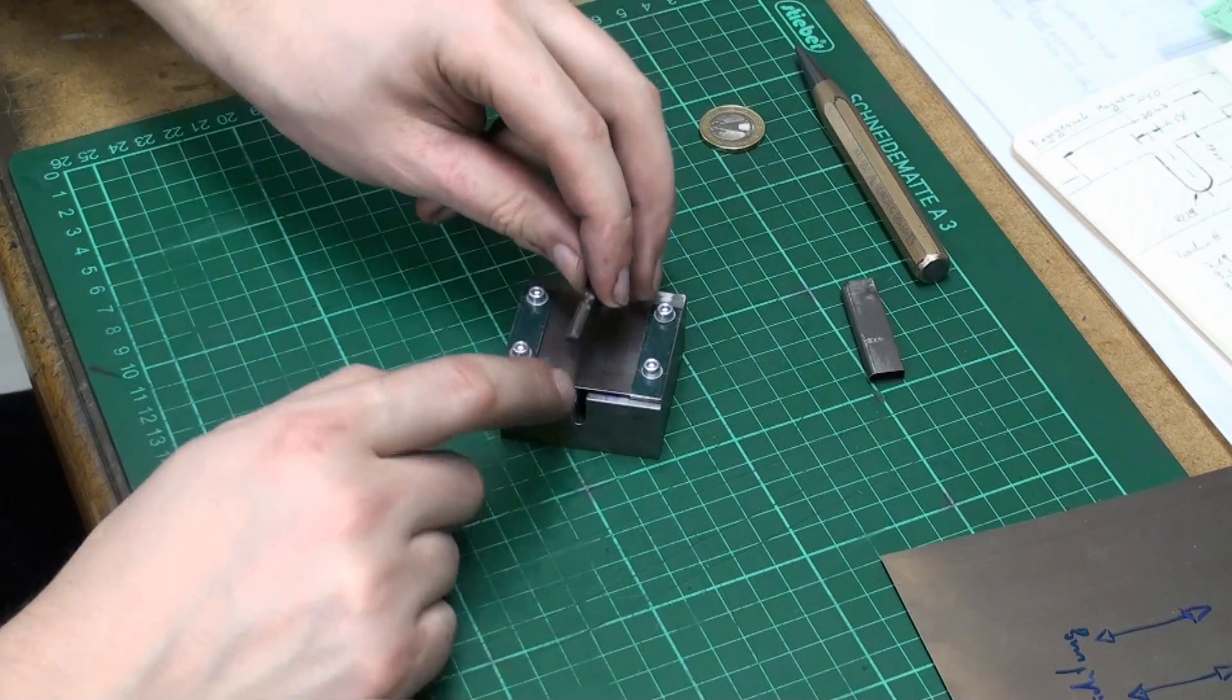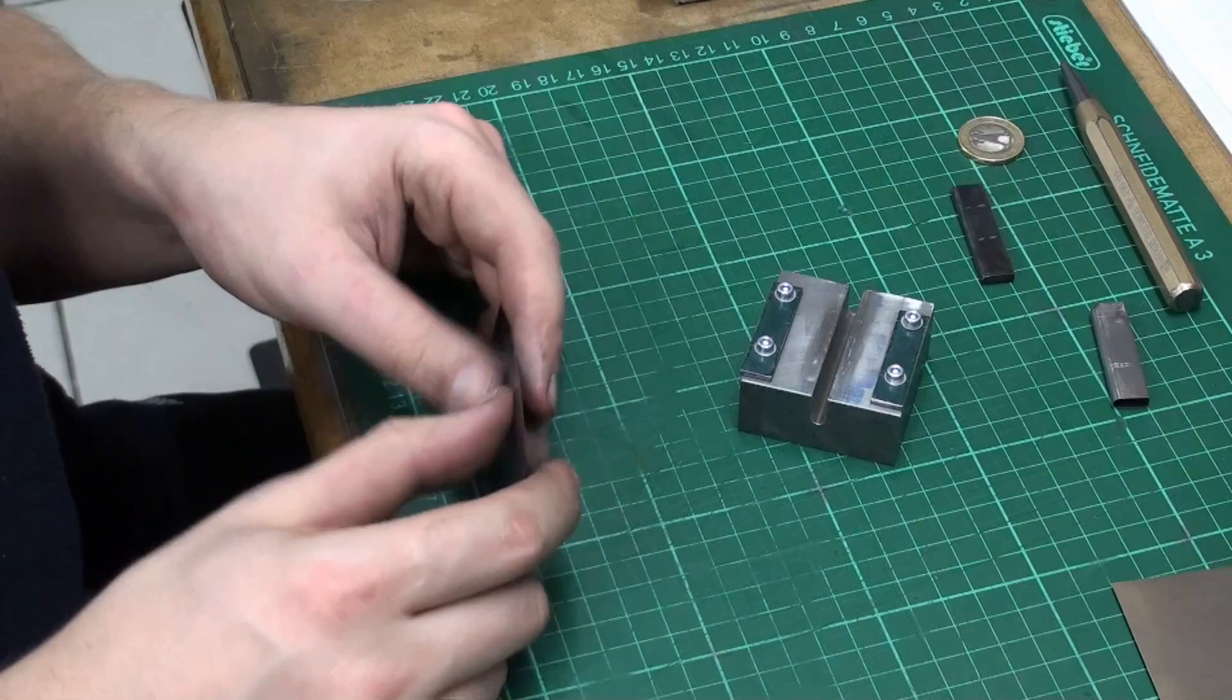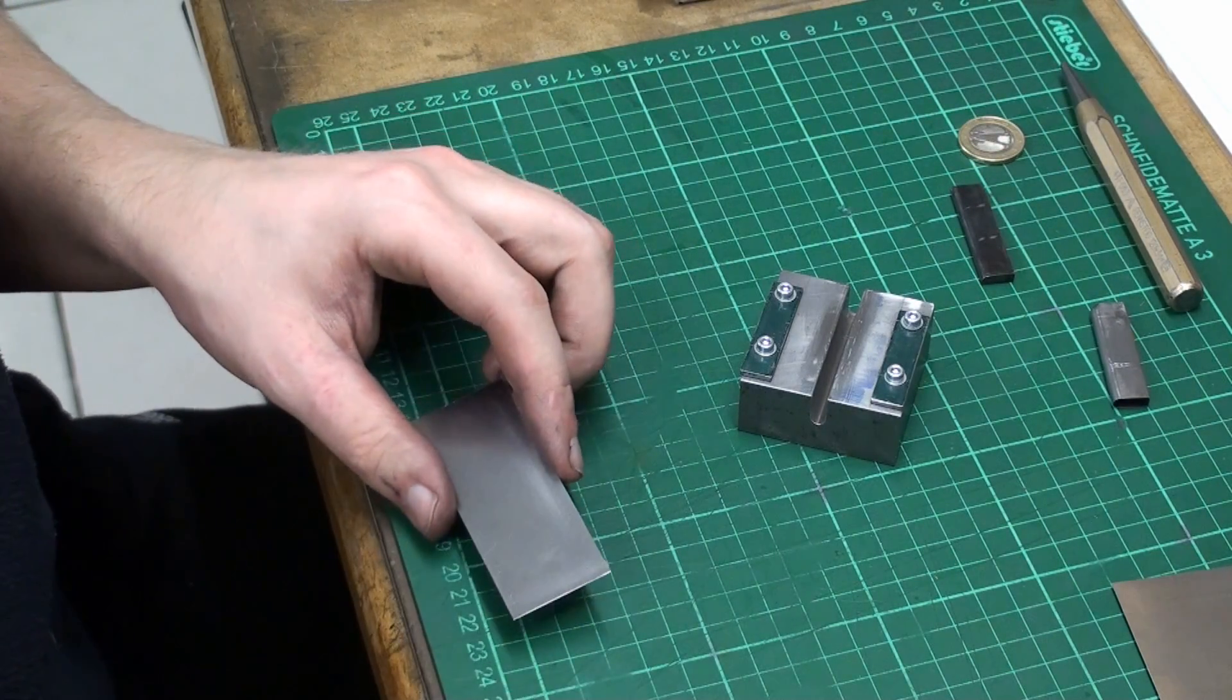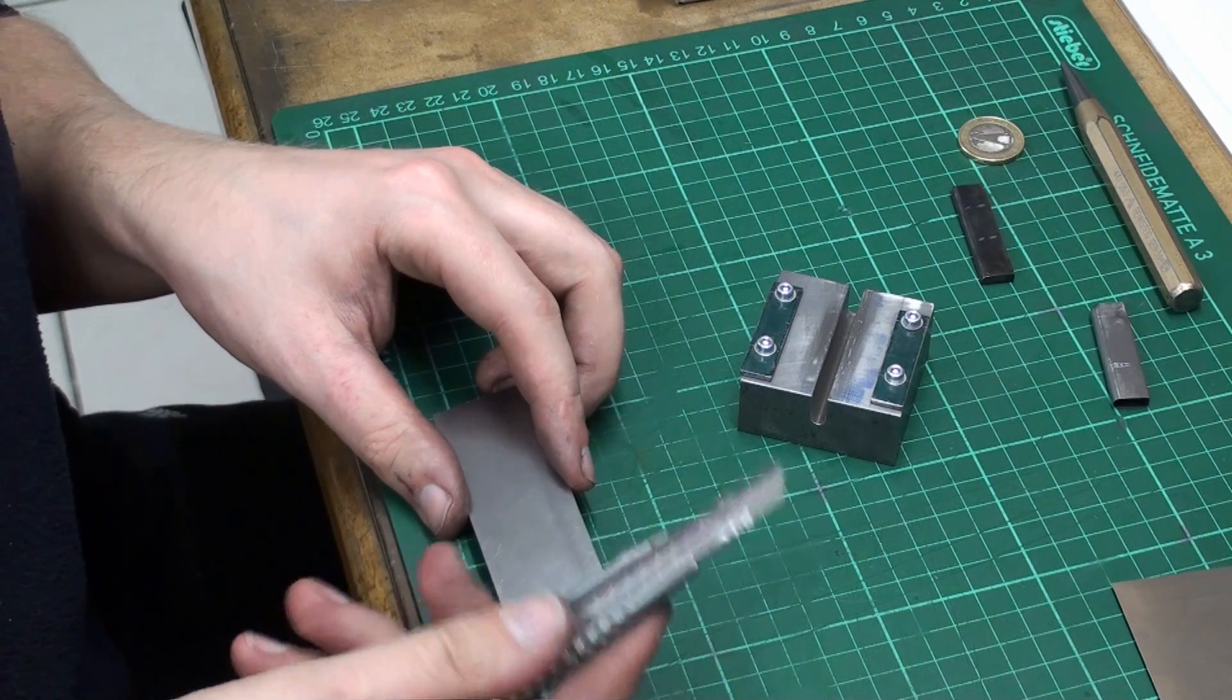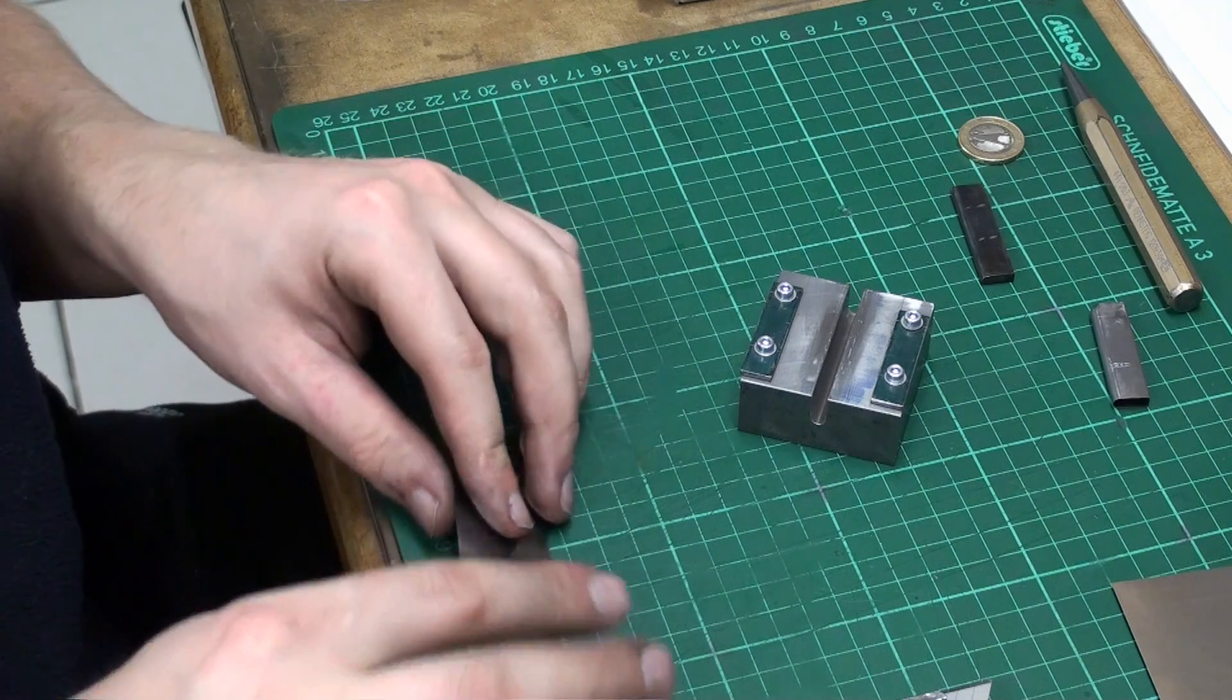Then we just have to bend the overhang over and weld it. As I said earlier this is 0.25 millimeters sheet metal and you can cut this just by scribing it a few times with the utility knife and then break it.